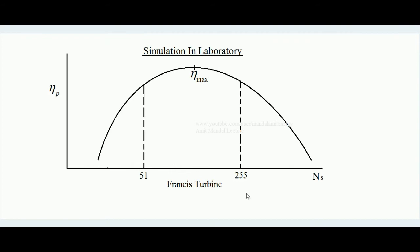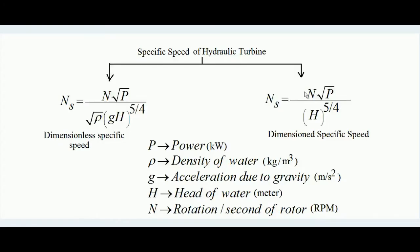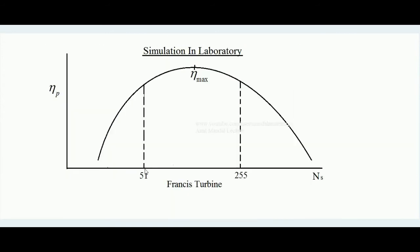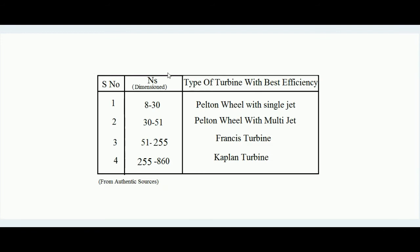The same experiment is done with Francis turbine in the laboratory using a small model, altering the parameters to get different specific speed values. It is found that Francis turbine is most efficient in the specific speed range of 51 to 255. The same is done for Kaplan turbine. In the table, the various ranges of specific speed for maximum efficiency are: Pelton wheel single jet 8.5–30, multi-jet 30–51, Francis turbine 51–255, and Kaplan turbine 255–860.